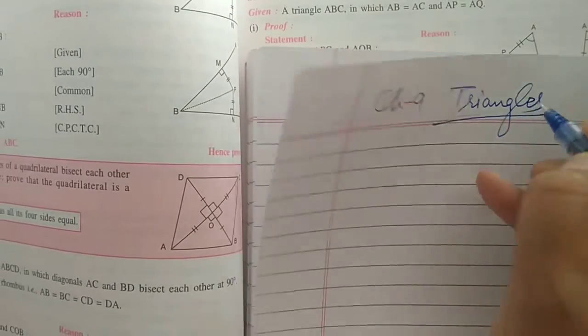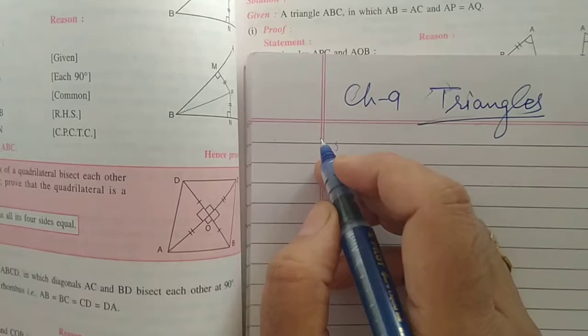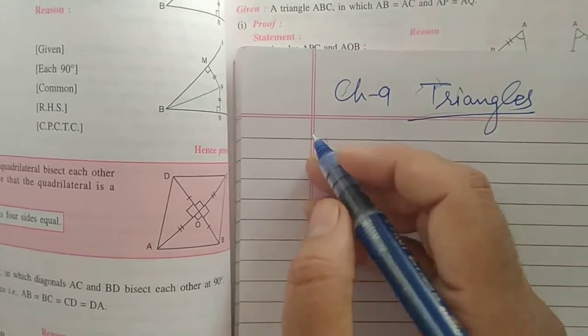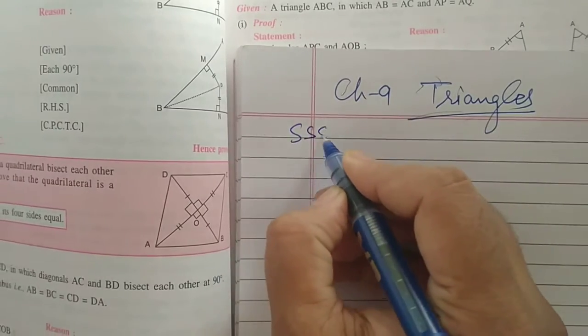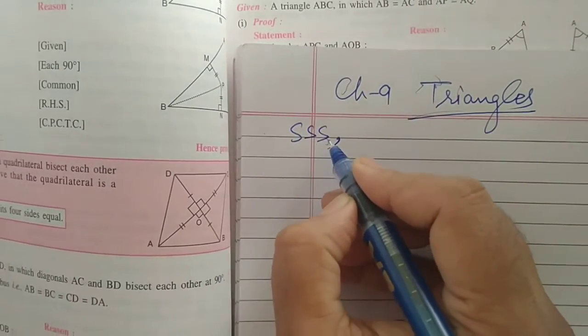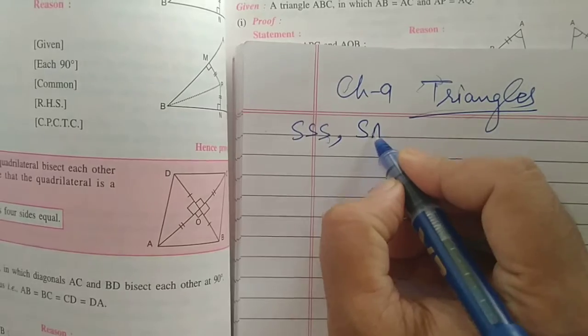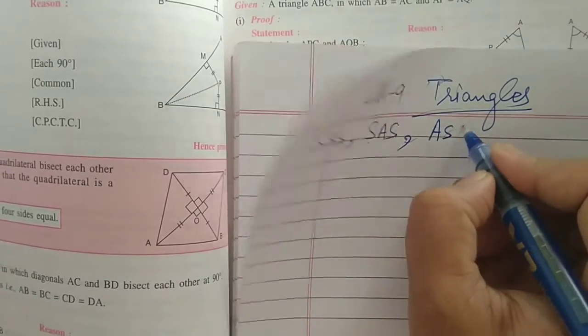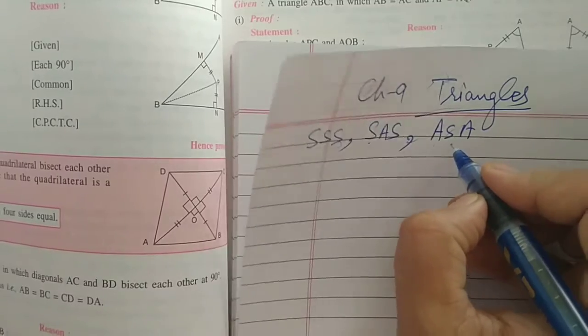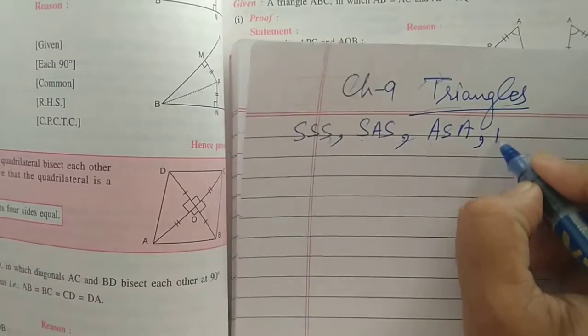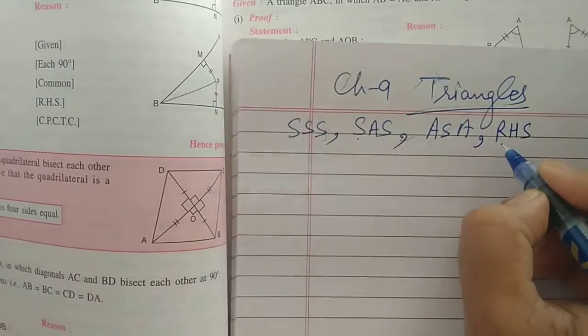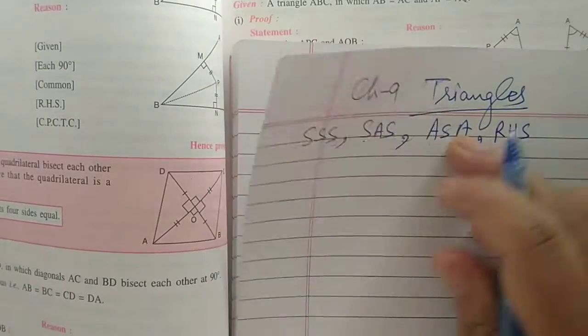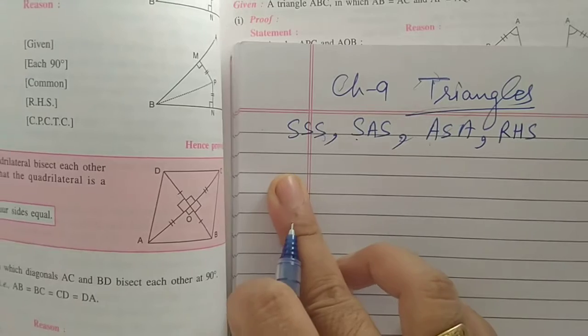In this chapter, we have already done the conditions for congruency of two triangles that were SSS (side, side, side), then SAS (side, angle, side), then ASA (angle, side, angle), and last one RHS (right hand side, hypotenuse and one side) for two triangles.